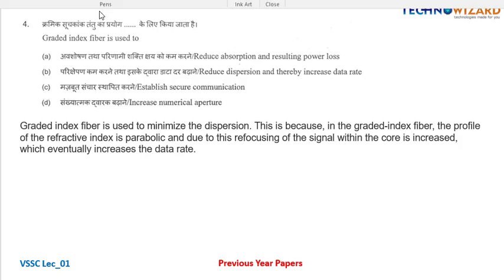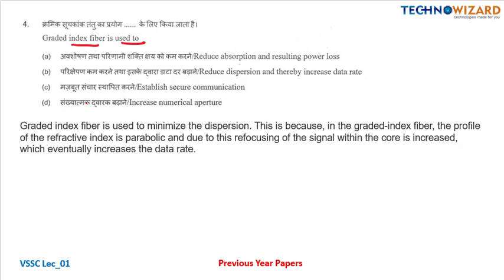Question number four: graded index fiber is used to minimize the dispersion. This is because in graded index fiber, the profile of the refractive index is parabolic. Due to this, refocusing of the signal within the core is increased, which eventually increases the data rate. So graded index fiber is used to minimize dispersion.